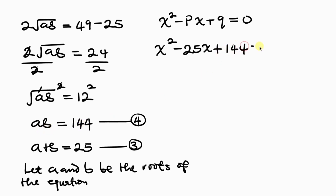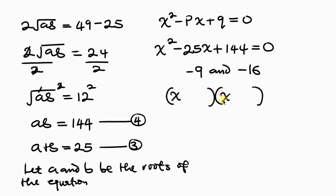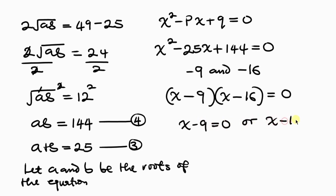What are the factors of 144? Choosing negative 9 and negative 16: negative 9 times negative 16 gives 144, and when added together they give negative 25. So the factored form is (X minus 9)(X minus 16) equals 0. There are two cases: X minus 9 equals 0, or X minus 16 equals 0. Therefore X equals 9 or X equals 16.